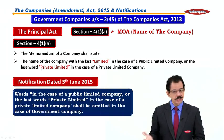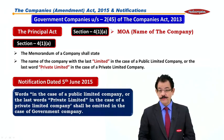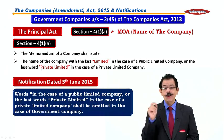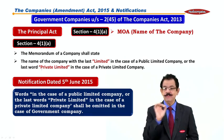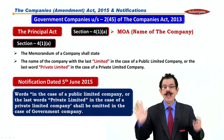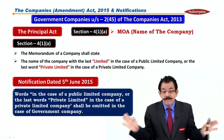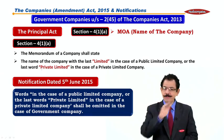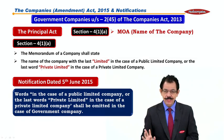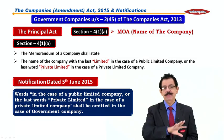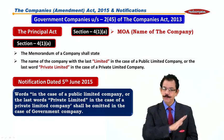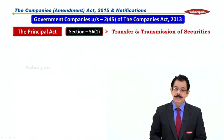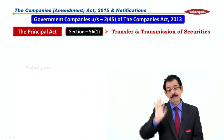Notification dated 5th June: the last words 'public limited company' or 'private limited' in the case of a private limited company shall be omitted in the case of a government company. So in the case of a government company, there is no requirement to use the words 'private limited' or 'limited' — these words are omitted. This is a very important point.